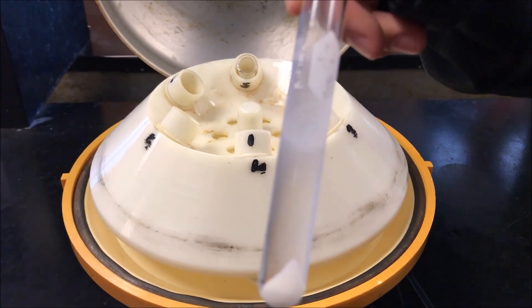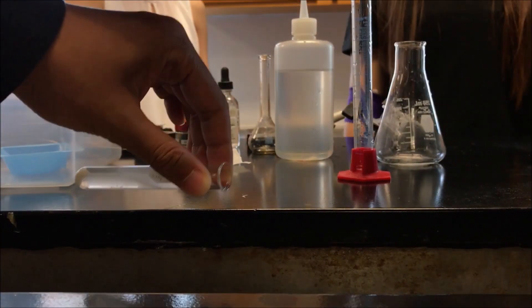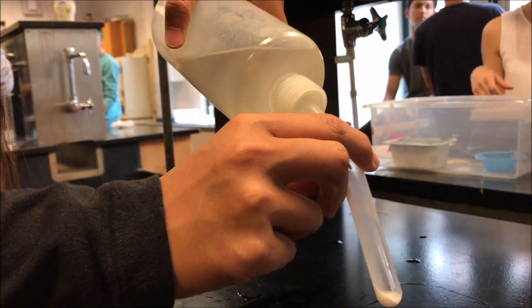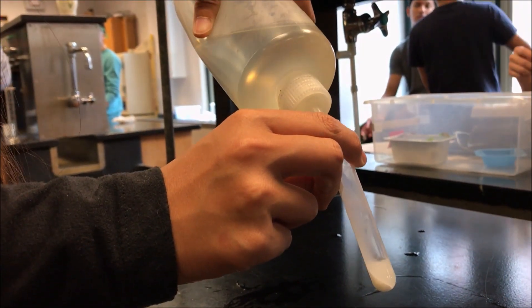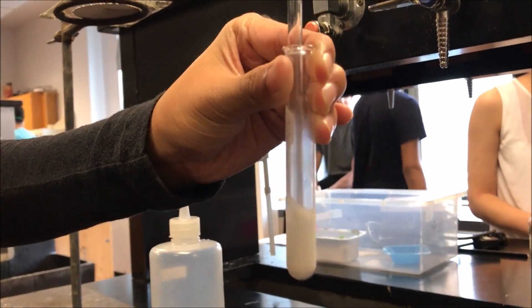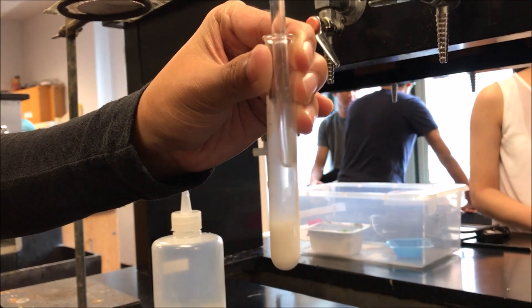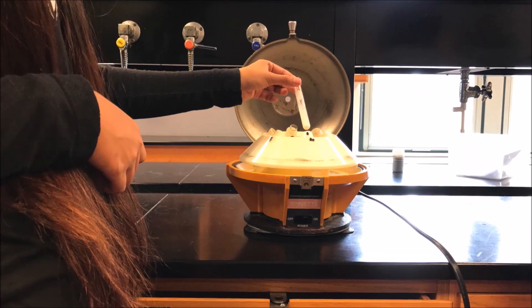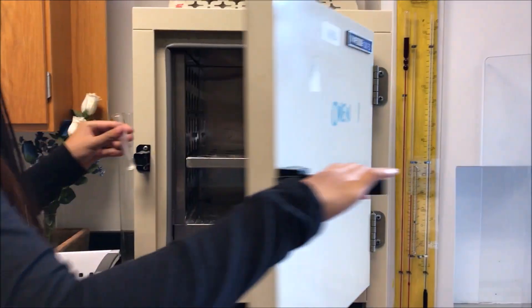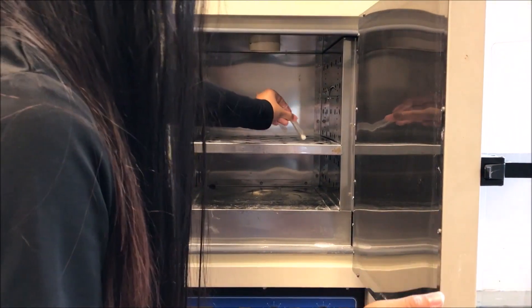Remove your test tube from the centrifuge and begin to decant the liquid. Flush the precipitate by adding a small amount of water to the test tube. Stir with a stirring rod and centrifuge again for 90 seconds. Remove the test tube to decant the water. Place it in an oven for about 10 minutes.